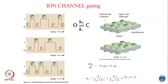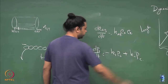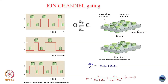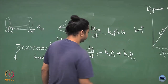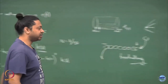An ion channel exists in two states — open or closed — with rate constant k₊ for open-to-closed and k₋ for closed-to-open. I can write down the probability of finding the ion channel in the open state: dP_O/dt = −k₊·P_O + k₋·P_C. This is minus k₊·P_O plus k₋·P_C, where P_O is the probability of being in the open state and P_C is the probability of being in the closed state. Since P_C = 1 − P_O, it becomes a one-variable equation and you can solve it.